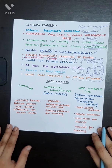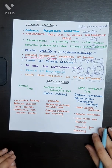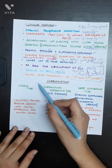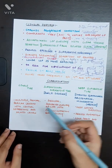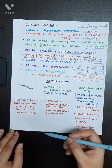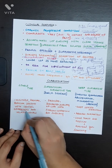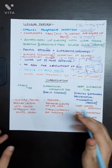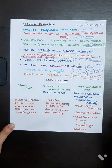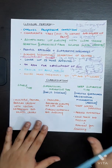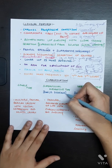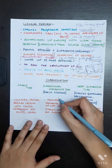Cheilitis Glandularis is classified into three types. The first is the simple type, which is asymptomatic. The patient presents with multiple painless papular lesions with central depressions and dilated canals. The condition is asymptomatic in this type.